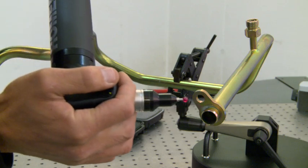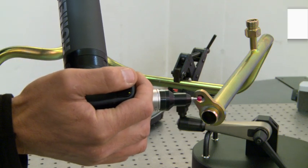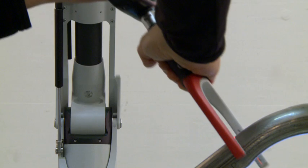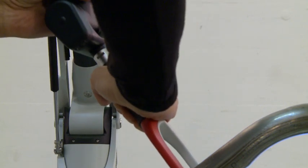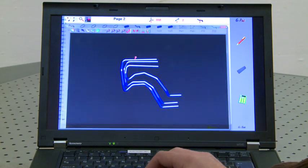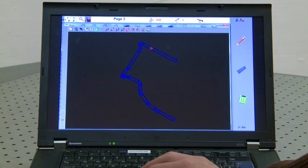The automatic probe detection enables the user to switch from tube probe to hard probes within seconds. This allows capturing both the tube parameters and additional geometry features in the same measurement process, which reduces inspection time significantly.